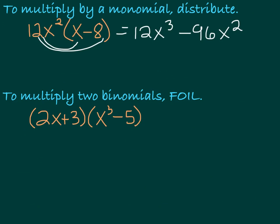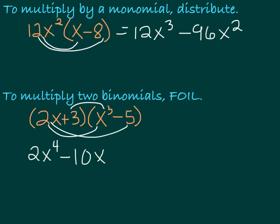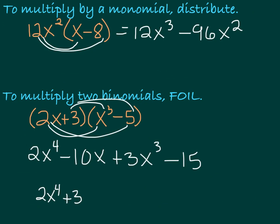As you already know, if you're going to multiply two binomials together, you need to FOIL. So here we'd have 2x times x cubed is 2x to the 4th. 2x times negative 5 is minus 10x. 3 times x cubed would be plus 3x cubed. And 3 times negative 5 would be minus 15. Then you want to put this in standard form — in the proper order. So we've got 2x to the 4th first, plus 3x cubed second. There's no x squared. Minus 10x, and minus 15.